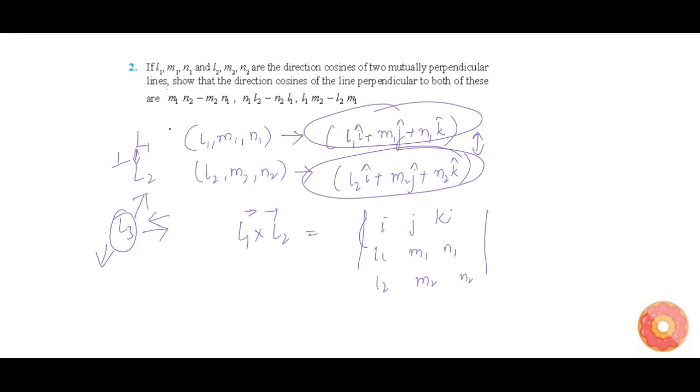Here, I have taken L1 bar as a vector parallel to line L1 and L2 bar as a vector parallel to line L2. Now, this equals I cap times (M1 N2 minus M2 N1) minus J cap times (L1 N2 minus L2 N1) plus K cap times (L1 M2 minus L2 M1).